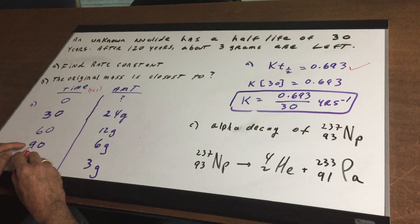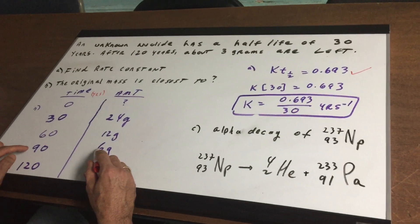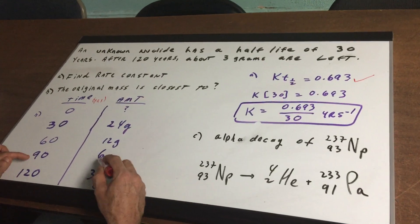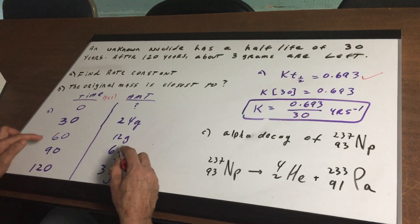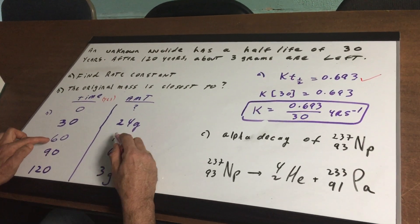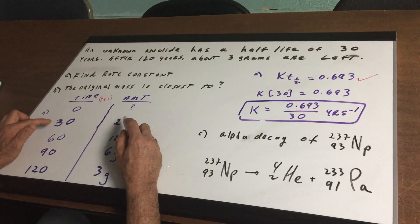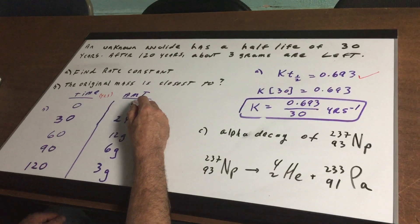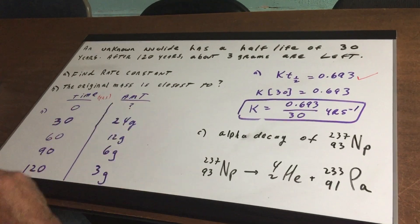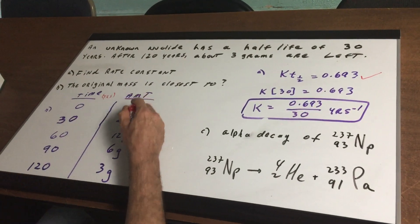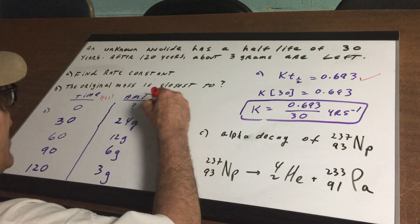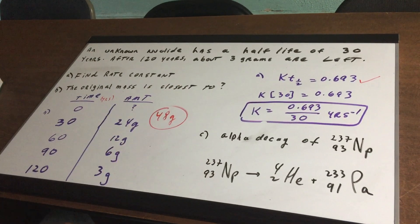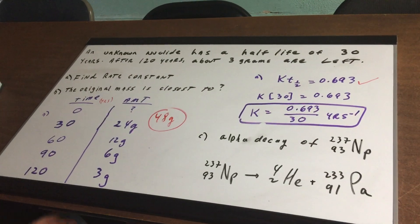At 90 years there would obviously be double the amount, because going backwards you're doubling each step — so that's 6 grams. At 60 years this would be 12 grams. At 30 years this would be 24 grams. And obviously some number was halved to get 24 — that number had to be 48 grams. So the original mass is closest to 48 grams.